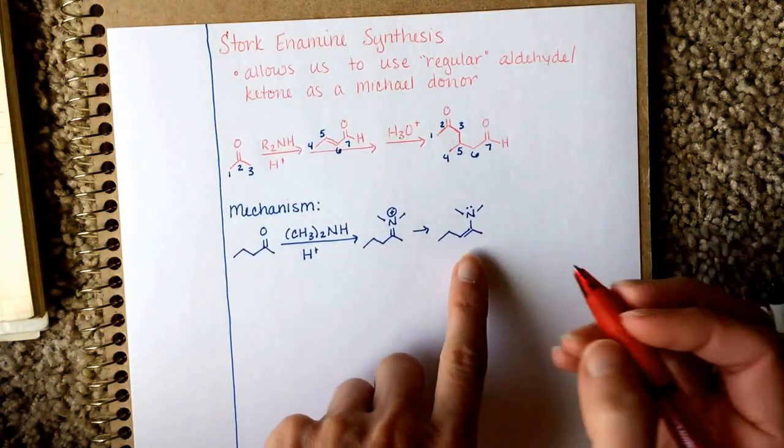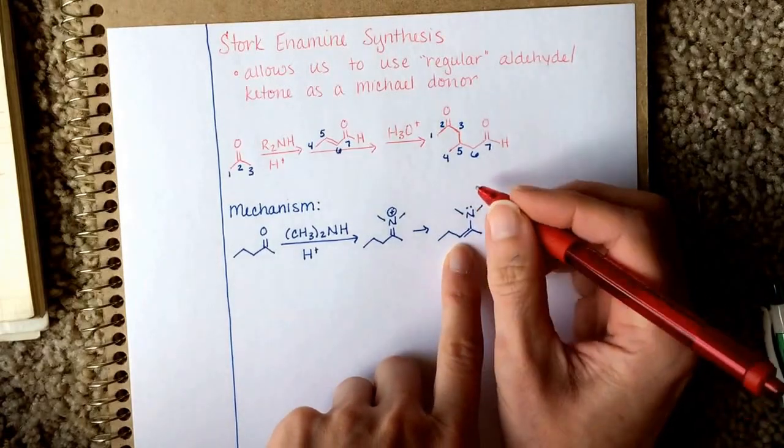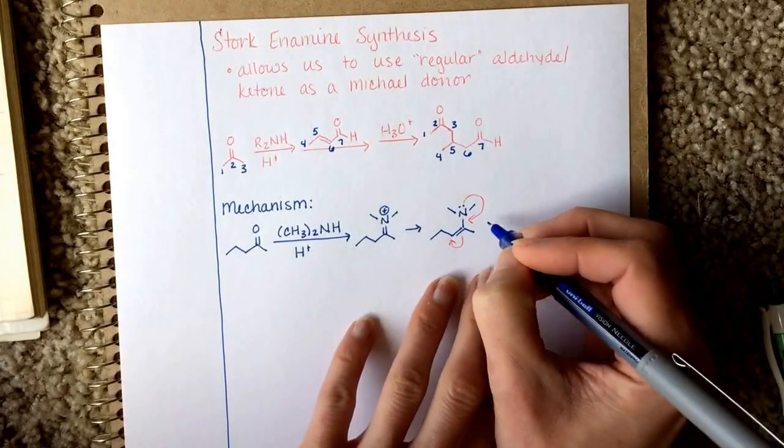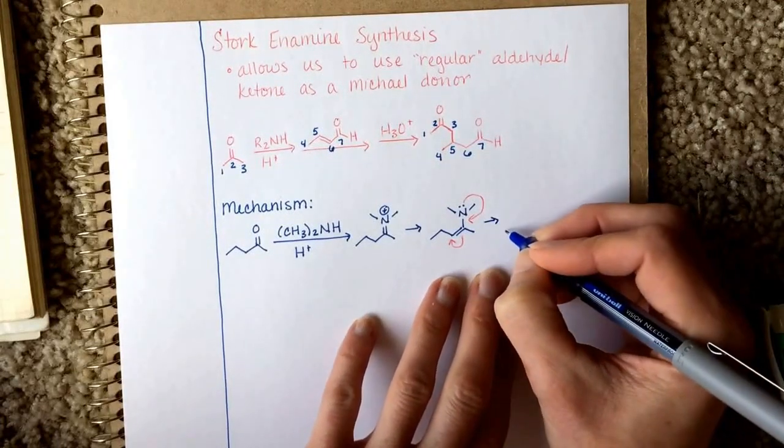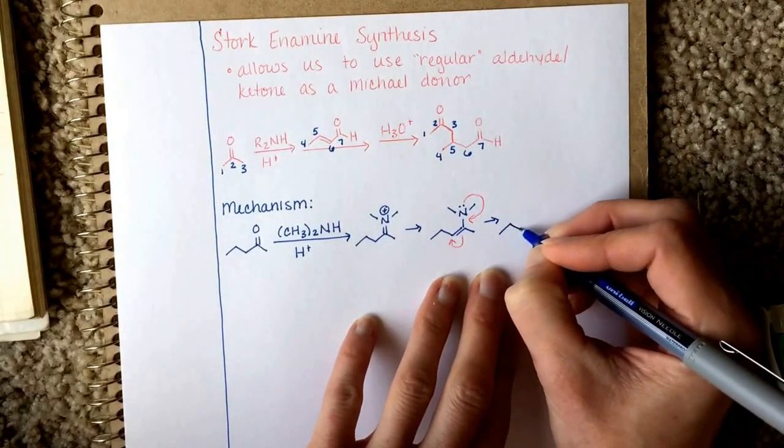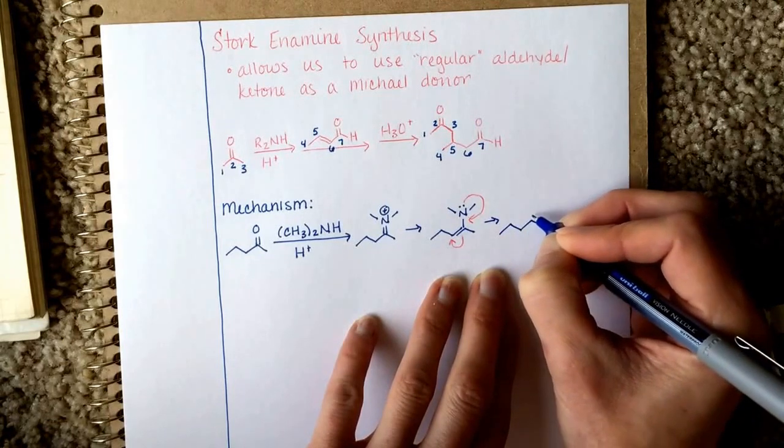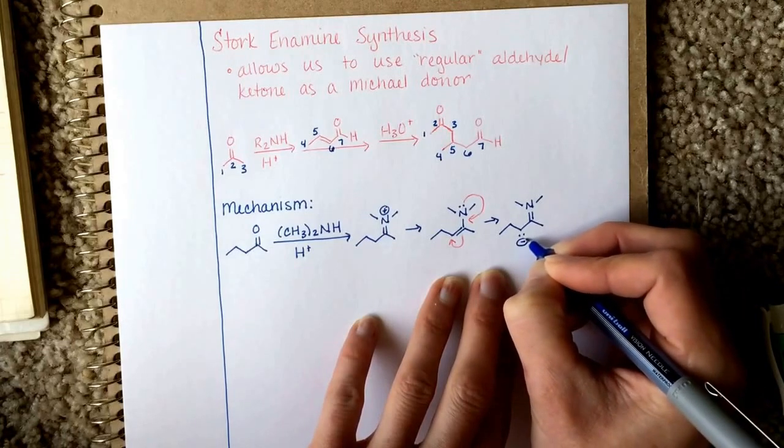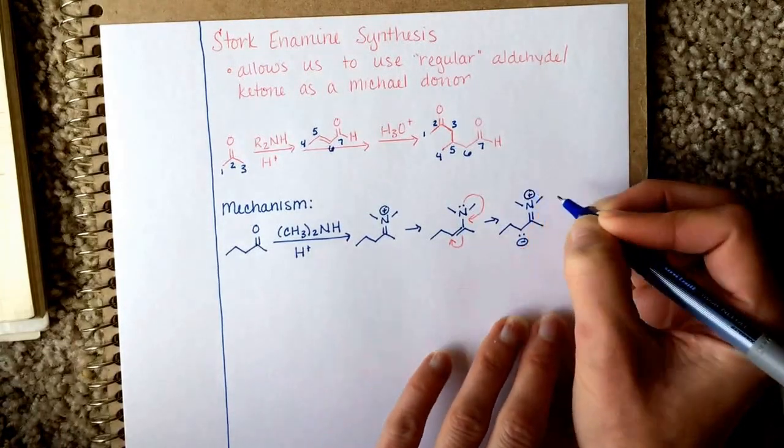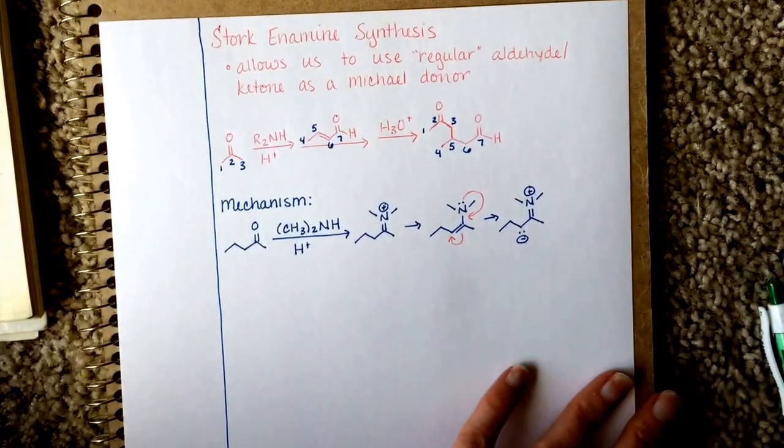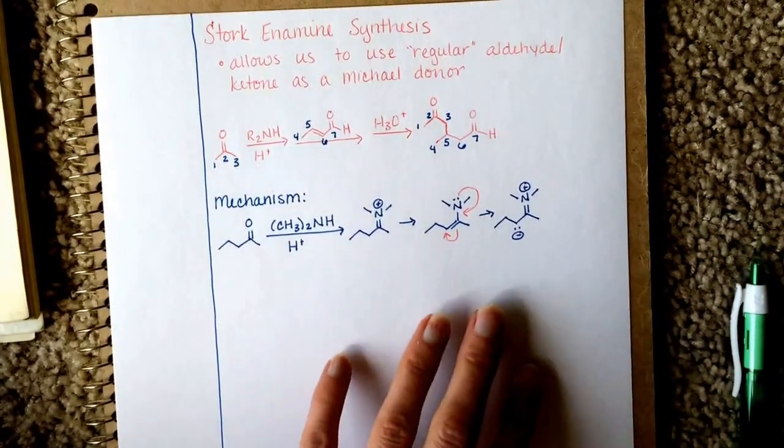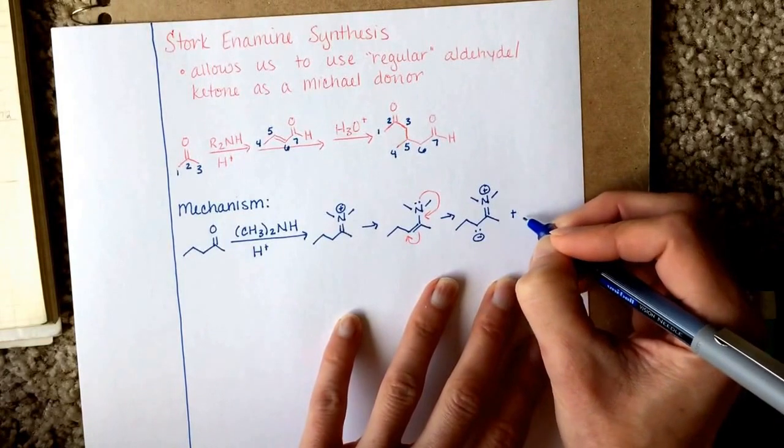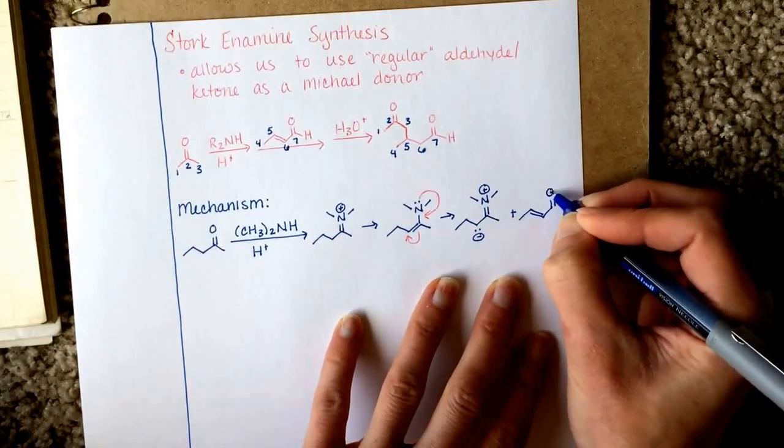This enamine converts itself into an enolate like that. Bring that lone pair of electrons down to reform the carbon-nitrogen double bond. And there's our enolate. And you may ask yourself, why would it even do that? It does that so that it can do the next step, which is reacting with the Michael acceptor.